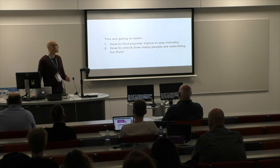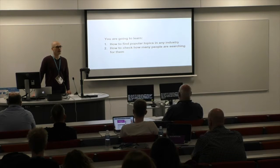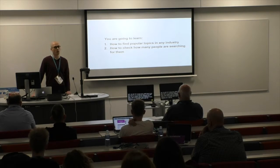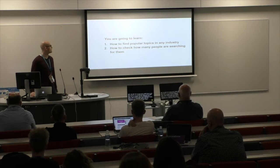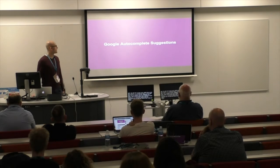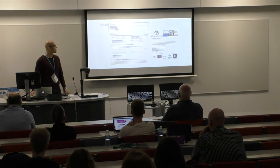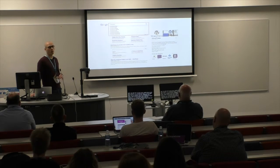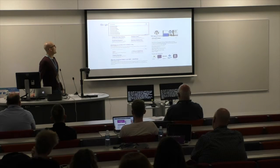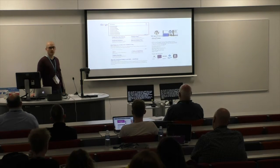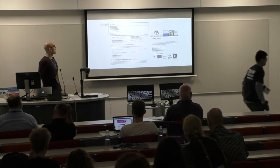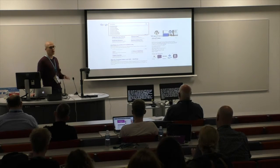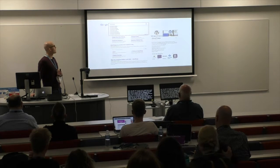First we'll talk about finding those popular topics in your industry, and then we will try to get an estimate of how many people might be searching for those questions and topics every month on Google. So let's start with Google Autocomplete — it's a feature that Google added to their search. Whenever you start typing a word or phrase in Google, it gives you a few suggestions of popular topics that other people are searching every month online, just to help you type in the whole phrase much quicker. Unfortunately, Google only shows you eight suggestions, which is not very helpful for us.